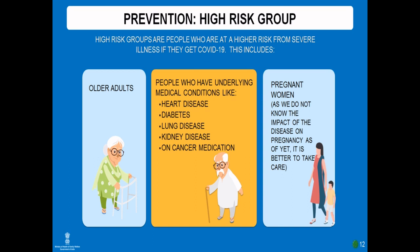High risk groups are people who are at a higher risk of severe illness. Once infected with COVID-19, they tend to go into complications. They include older adults and people with underlying medical conditions like heart disease, diabetes, lung disease, kidney disease, or those on cancer medications. Pregnant women are also considered high risk, as the impact of the disease on pregnancy is not fully known.